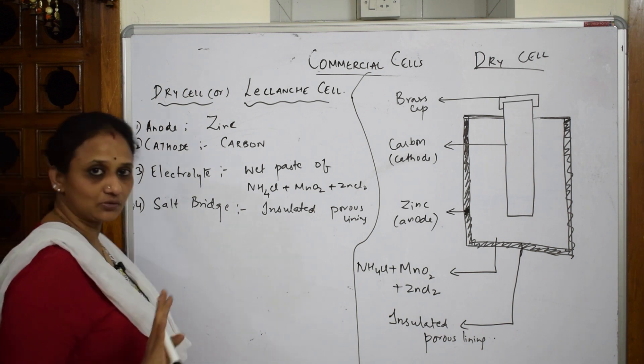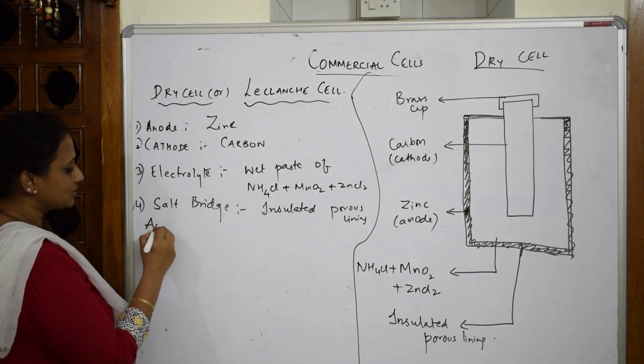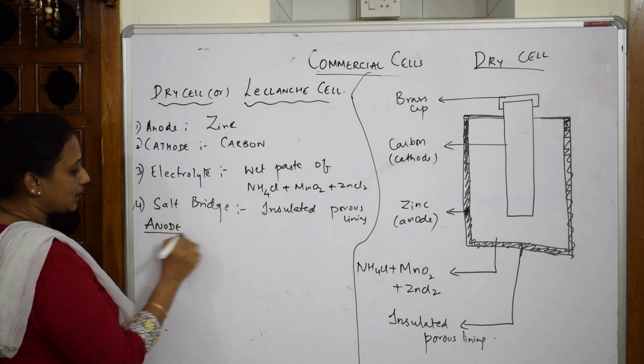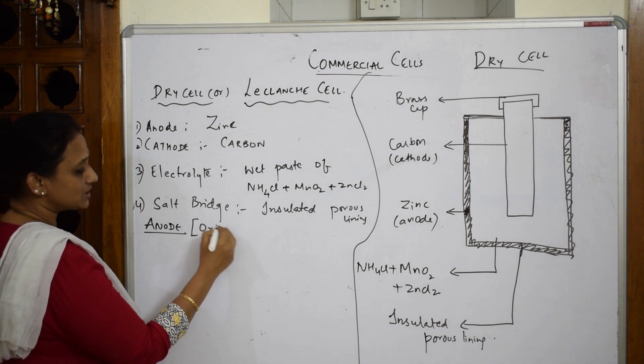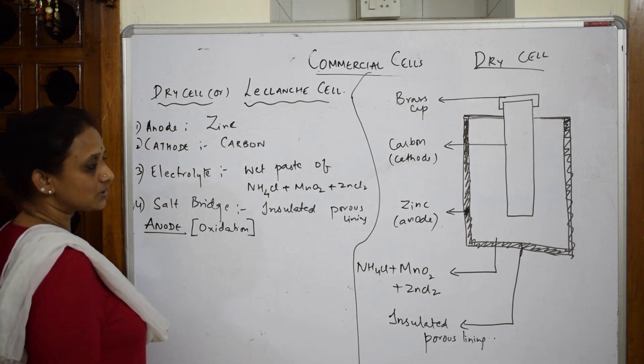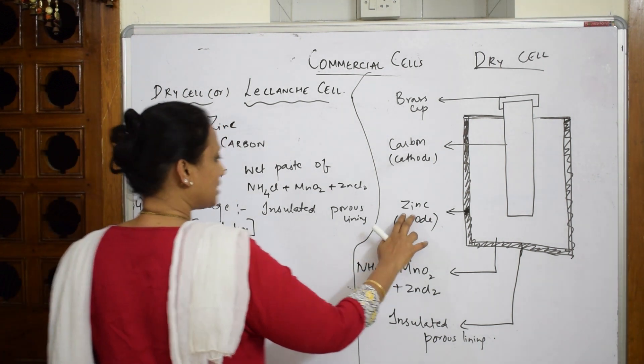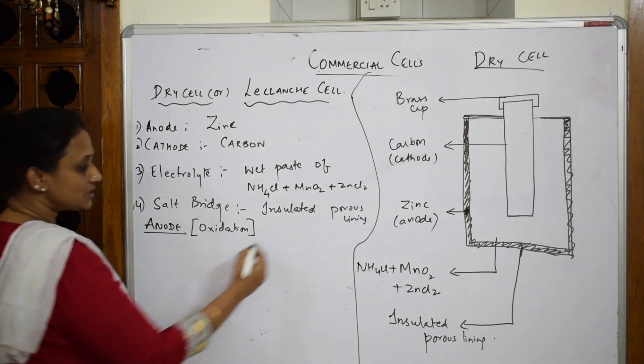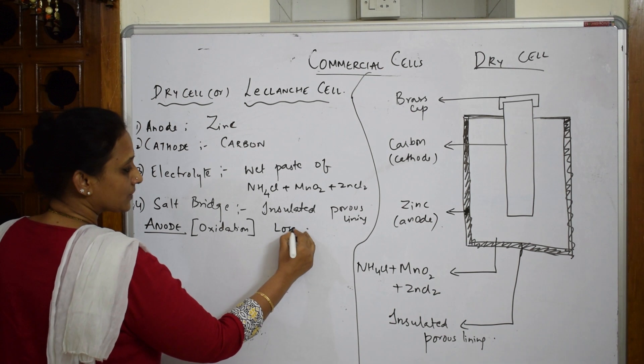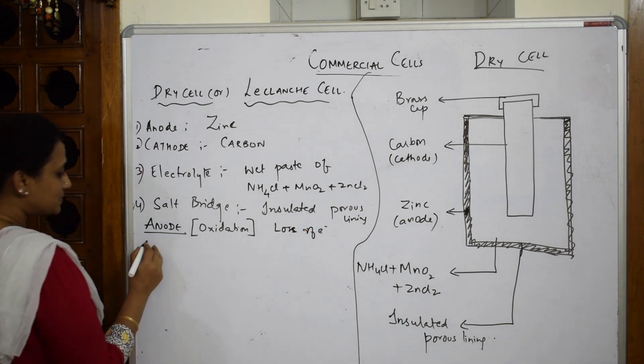After this, I have to write the anodic reaction and cathodic reaction. Observe carefully, always start with anode. At the anode, what will happen? Always oxidation occurs.